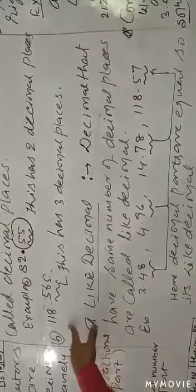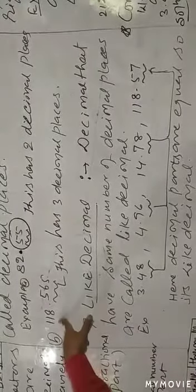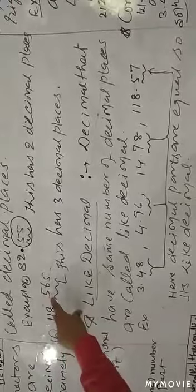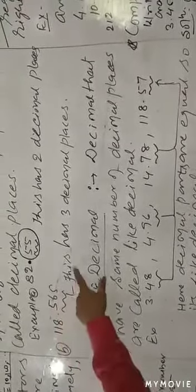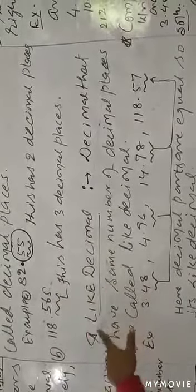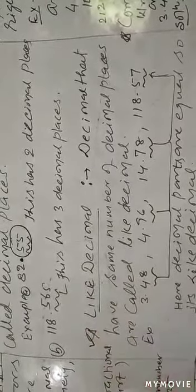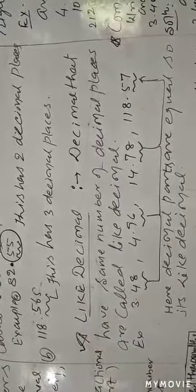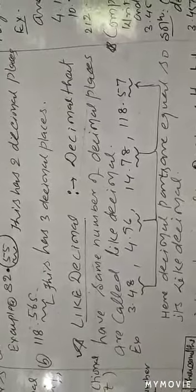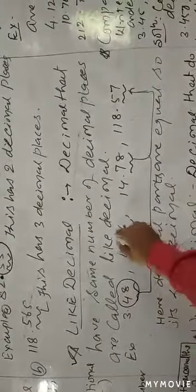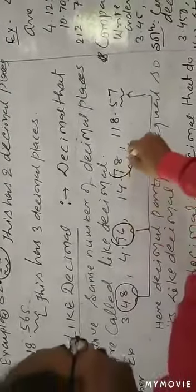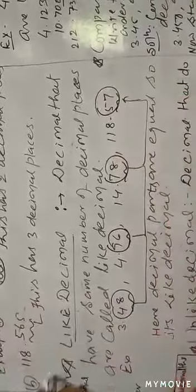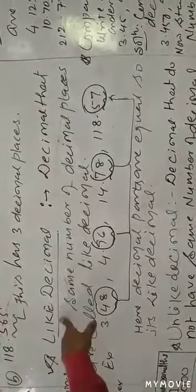0.55 has two decimal places. Now 180.565 — this has three decimal places, because there are three digits after the decimal point: .565. So next topic is like decimals. What are like decimals? If there are many numbers and the decimal parts are similar, then they are called like decimals.